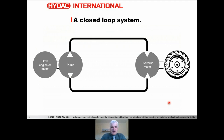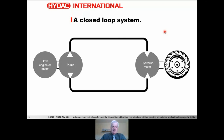It's a closed loop by application. The pump can pump in one of two directions — into the motor one way to drive the wheel forward, and into the motor the other way to drive the wheel in reverse. One key characteristic of these systems is that both the pump and motor have leakage, which is a necessary part of lubrication.